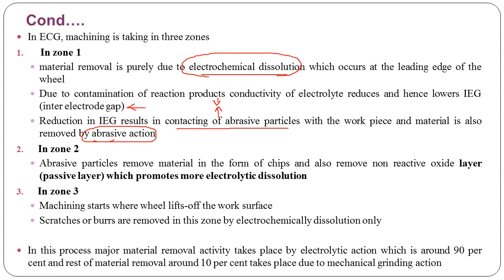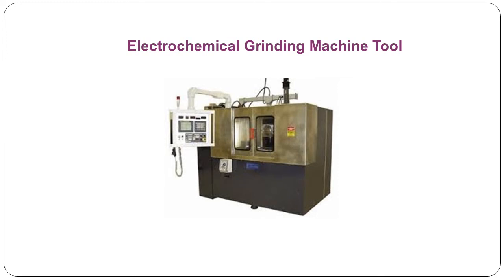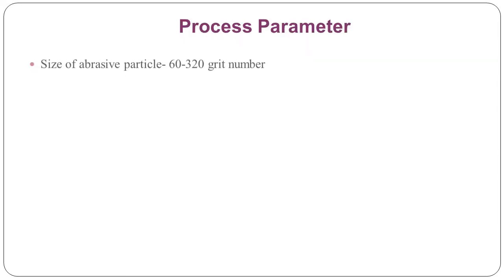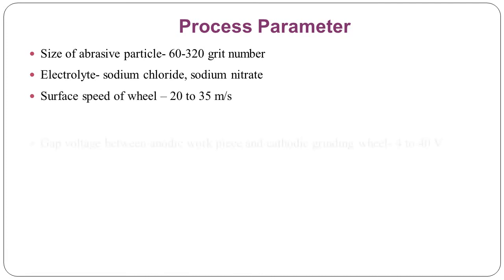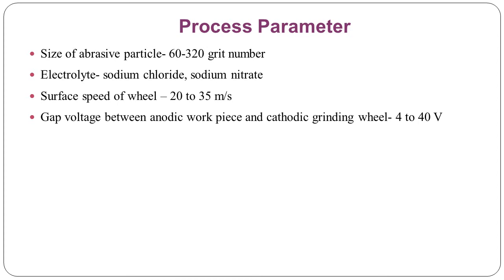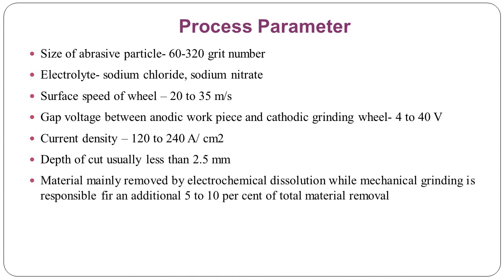In the second zone, abrasive particles remove material in the form of chips. Process parameters for ECG: size of abrasive particle is about 60 to 320 grit number; electrolyte used is sodium chloride and sodium nitrate; surface speed of the wheel is 20 to 35 meter per second; gap voltage between anodic workpiece and cathodic grinding wheel is 4 to 40 volt; current density is up to 120 to 240 ampere per centimeter square; depth of cut usually less than 2.5 mm. Material is mainly removed by electrochemical dissolution, while mechanical grinding accounts for an additional 5 to 10 percent of total material removal through abrasion action.